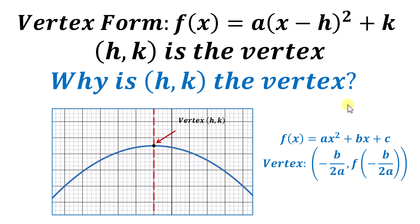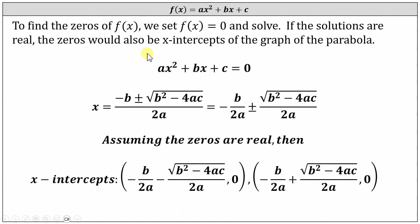Let's quickly review how we determine that the vertex x-coordinate must be −b/2a when the quadratic function is in general form. Recall to find the zeros of any function, we set f(x) equal to zero and solve. If these solutions are real, then the zeros would also represent x-intercepts on the graph of the parabola.